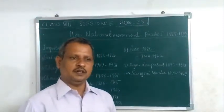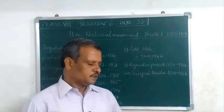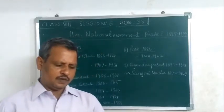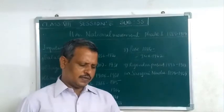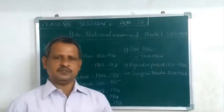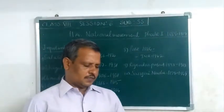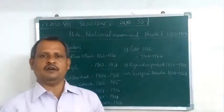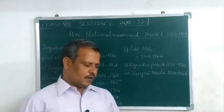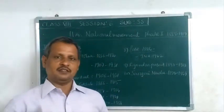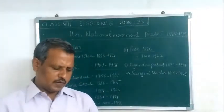Lord Curzon was one of the Governors of India. He declared the partition of Bengal with effect from 16th October 1905. That day was observed as a day of mourning, as people protested against the British rule and the partitioning of Bengal.